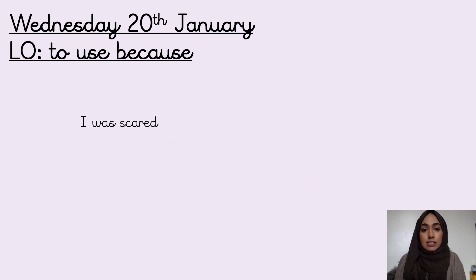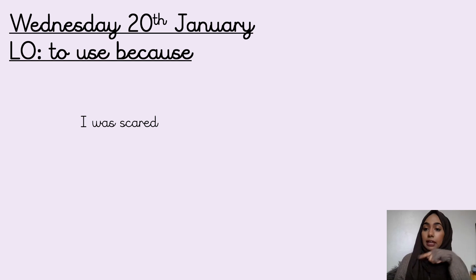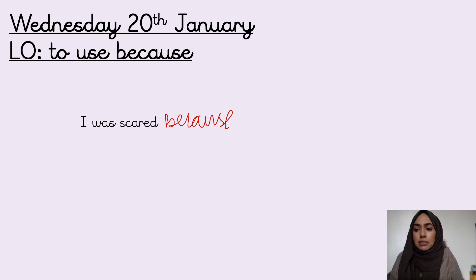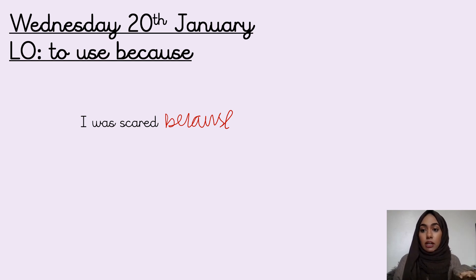This time we have the sentence 'I was scared.' I could ask why were you scared, and you could give me another sentence, but instead I want you to explain it using a conjunction. Press pause now and think about how you can complete this sentence. You could have said you were scared because you saw a spider, or you were scared because it was very loud — all of these are giving reasons.